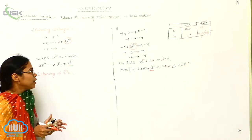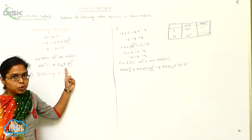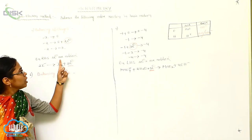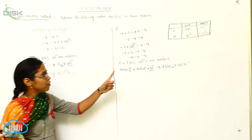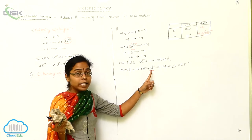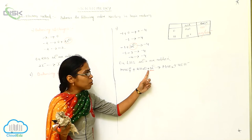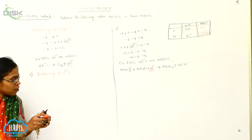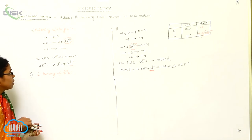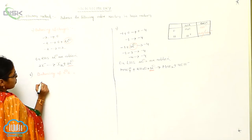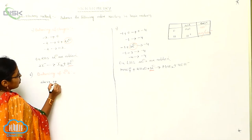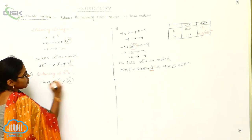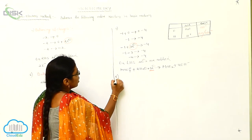So how can you balance this? You have to find the LCM: two times one is two, two times two is four, two times three is six. So multiply the oxidation equation by three. And three times one is three, three times two is six — so multiply the reduction equation by two. Then you get six electrons on both sides.